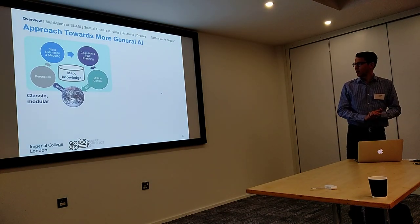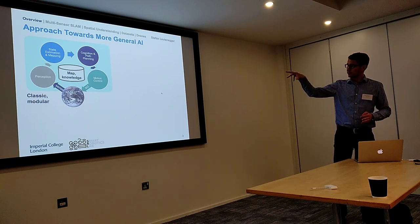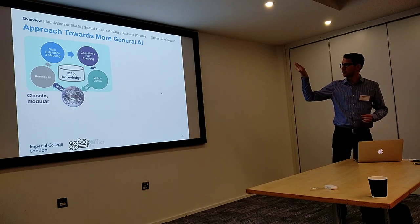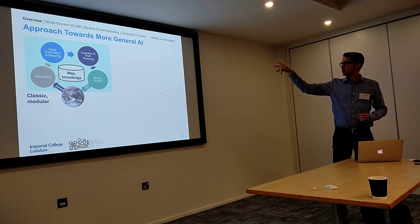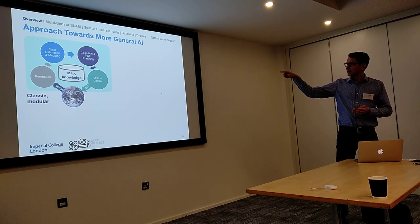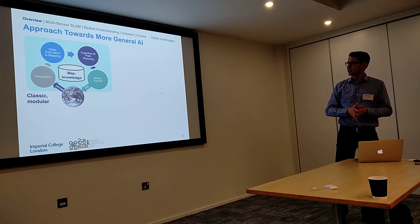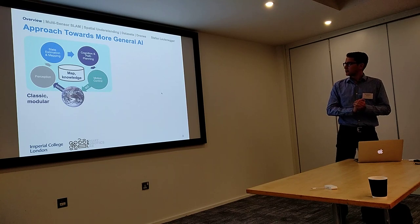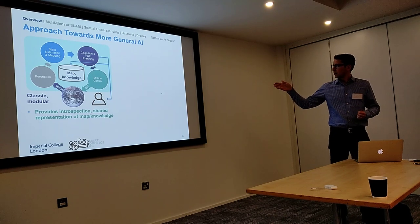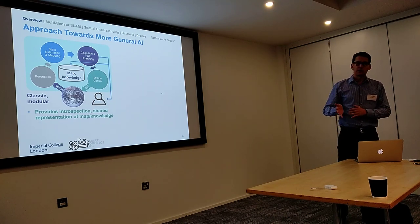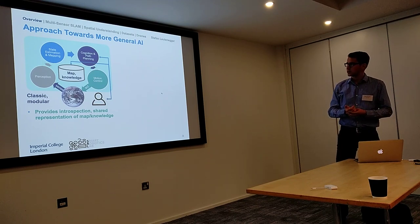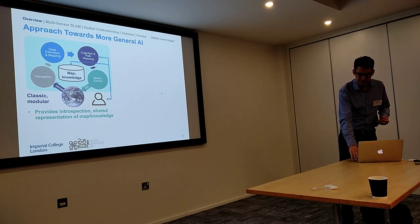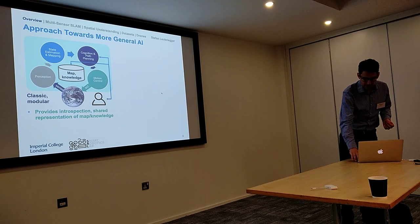A quick overview of how mobile robotics has been done traditionally: you break down the real-time control loop into different modules. You have a perception side, an estimation module doing SLAM, feeding outputs to cognition, path planning, and higher-level task planning. Finally, motion control — you act, your state changes, the world updates, and the whole thing repeats. The advantage is that users can introspect the system and use the same semantics as humans.